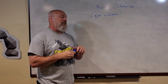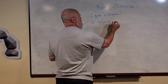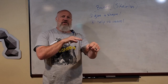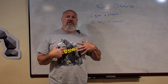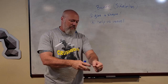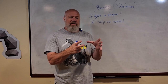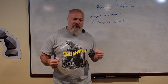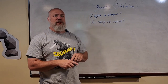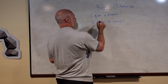Bones also help us move. Our muscles are attached to our bones — if I were just a skeleton with no muscles, all my bones would fall down into a pile. It's the muscles attached to the skeleton that provide tension and hold us upright, so we can stand on one foot, throw a ball, or climb a tree. Your bones give your muscles something to attach to.